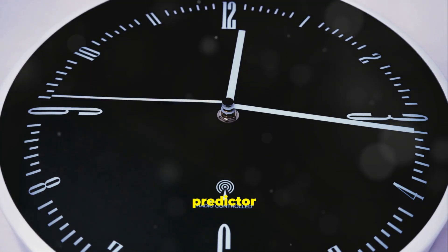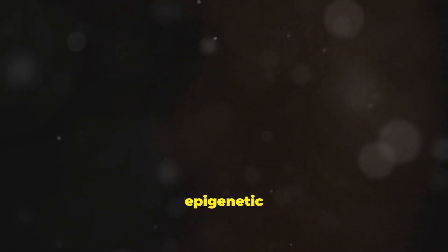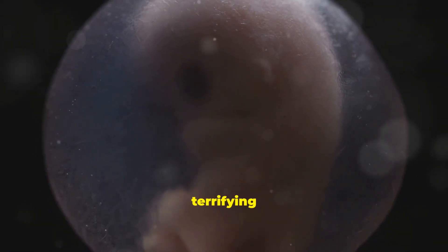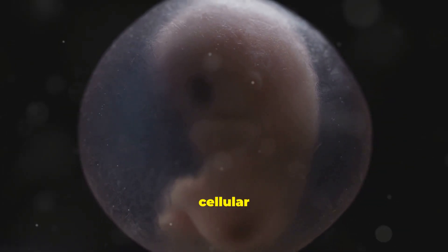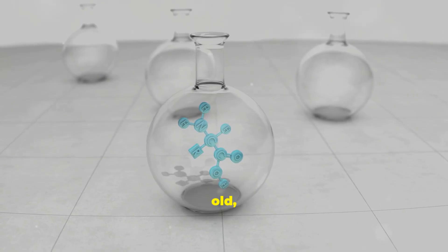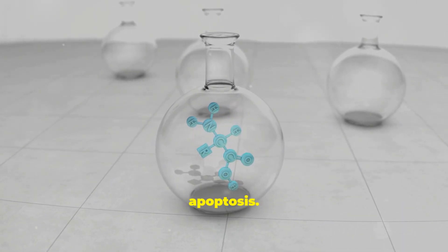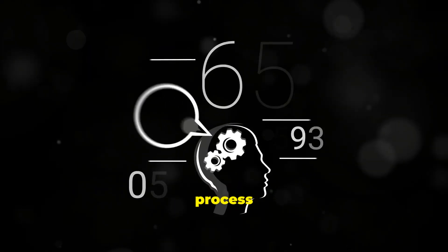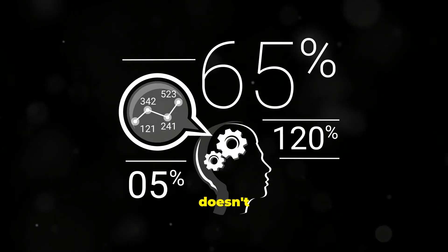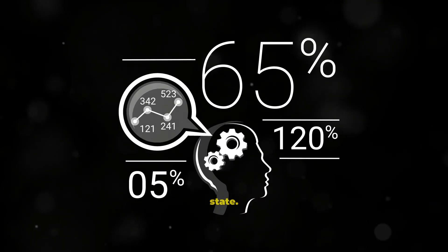It's a far more accurate predictor of health and lifespan than your driver's license. This epigenetic chaos leads to another fascinating and slightly terrifying consequence: cellular senescence. When a cell becomes too damaged or old, it's supposed to enter a self-destruct sequence called apoptosis, but sometimes this process fails. The cell doesn't die, but it stops dividing. It enters a zombie-like state.